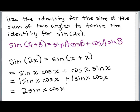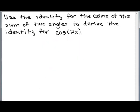We wanted to derive the identity for the sine of 2x, and now we've got it. How about using the identity for the cosine of the sum of two angles to derive the identity for the cosine of 2x?